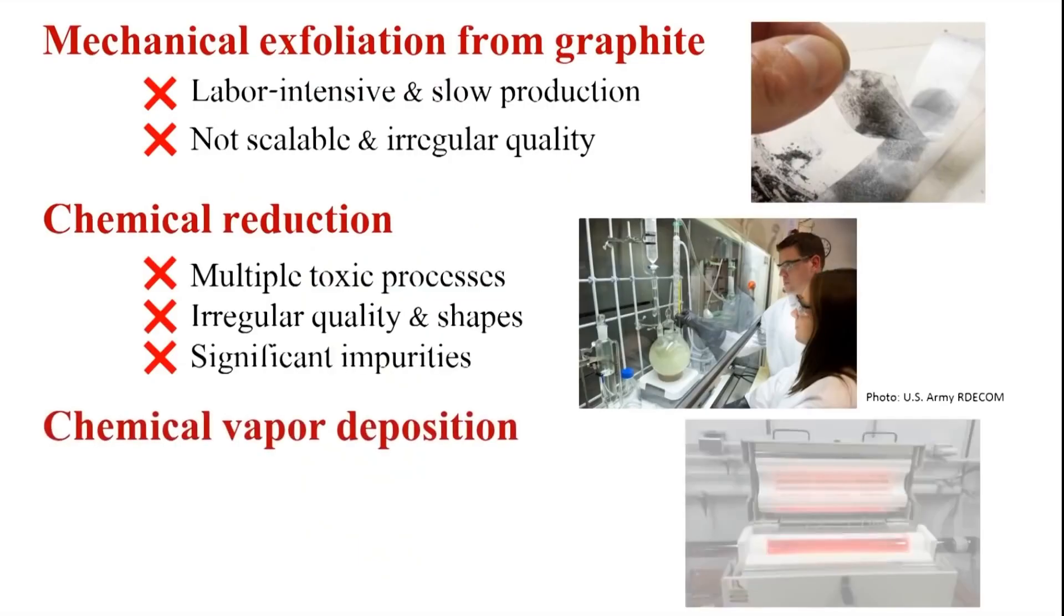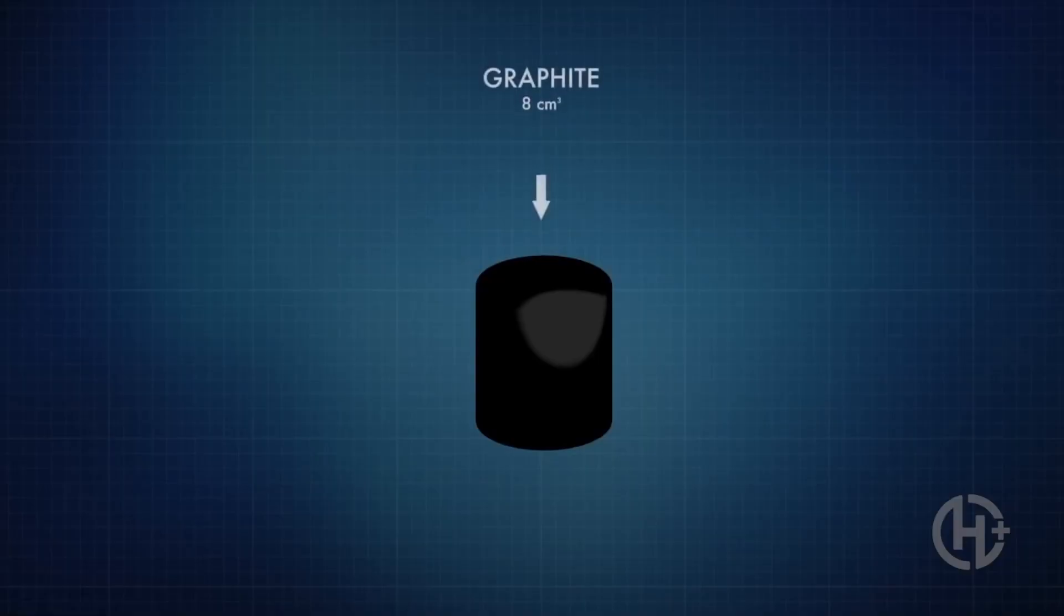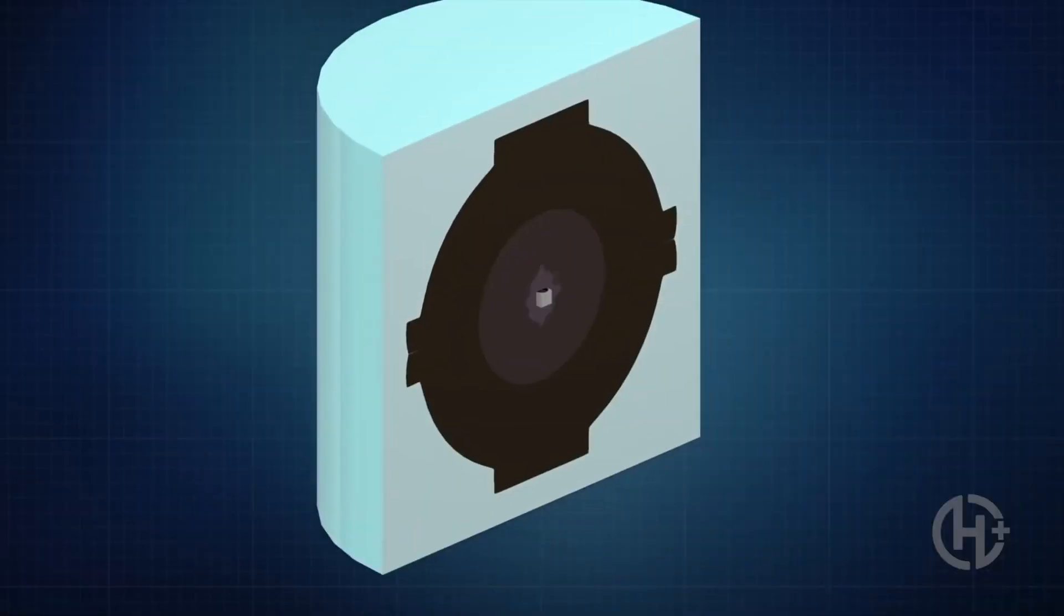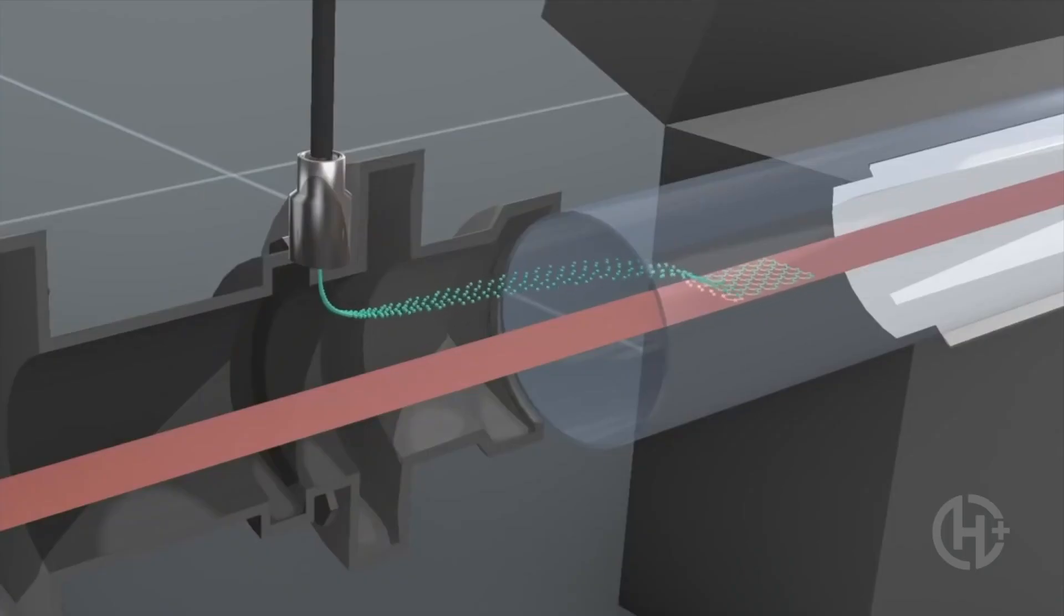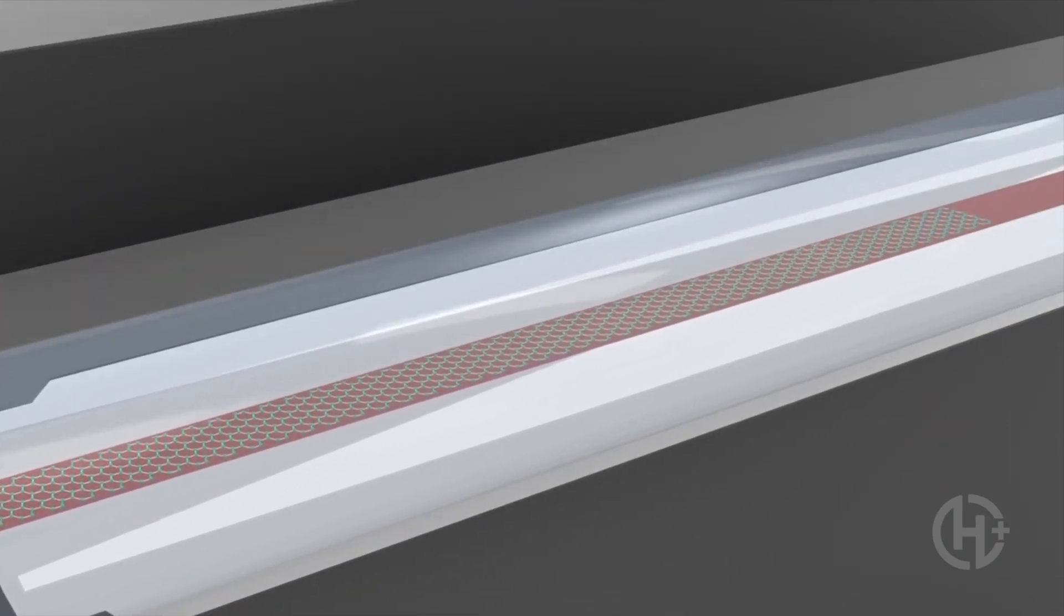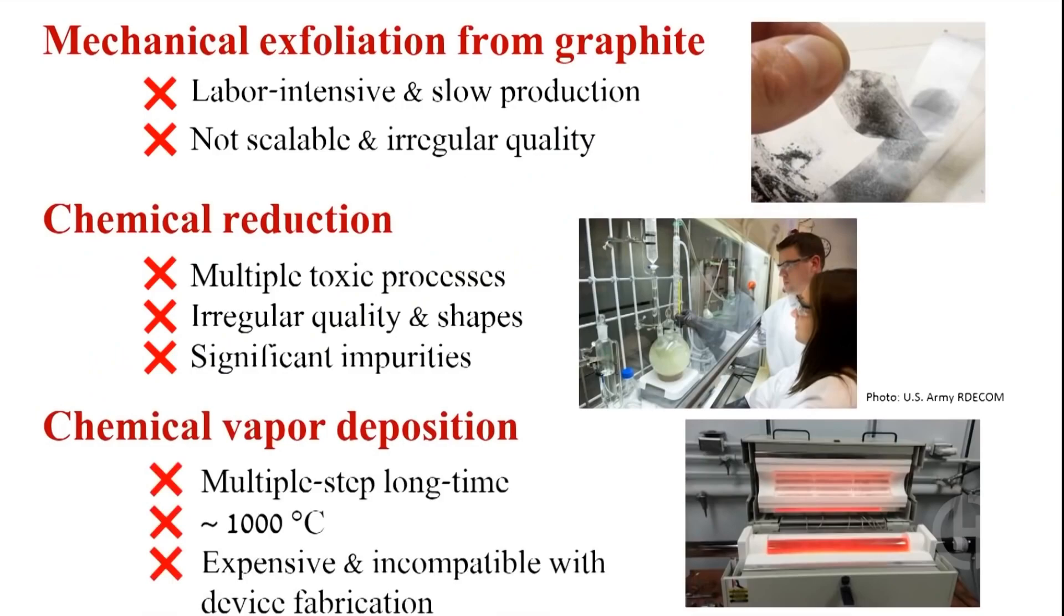Third, there's chemical vapor deposition, where we heat a copper substrate in a furnace at 1,000 degrees Celsius, annealing and tempering the substrate while introducing methane and hydrogen gas so that the carbon atoms get captured. It forms a continuous one-atom thick sheet, but this process isn't ideal either.